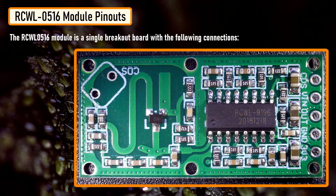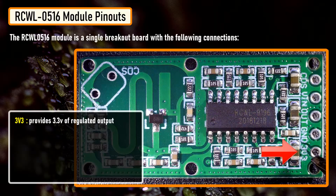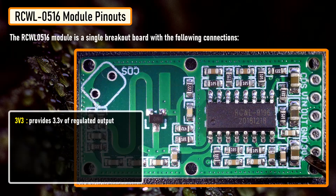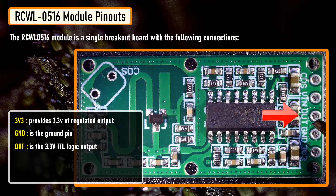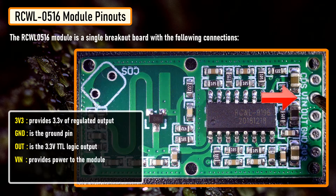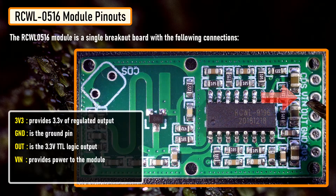The RCWL0516 module is a single breakout board with the following connections. The 3.3V pin is the output from the onboard 3.3 volt regulator, which can be used to power external circuits — remember, this is not an input pin, and it can provide up to 100 milliamps of current. GND is the ground pin. Out is the 3.3 volt TTL logic output; this pin goes high for 2 seconds when motion is detected and goes low when no motion is detected. VIN provides power to the module — connect this pin to an input voltage anywhere between 4 to 28 volts; however, 5 volts is commonly used.